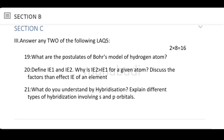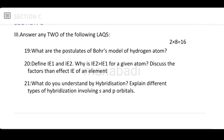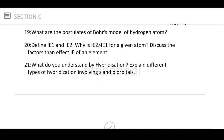Define first ionization energy and second ionization energy. Why is the second ionization energy greater than the first ionization energy for a given atom? Discuss the factors that affect the ionization energy of an element. Also: What do you understand by hybridization? Explain the different types of hybridization involving S and P orbitals.